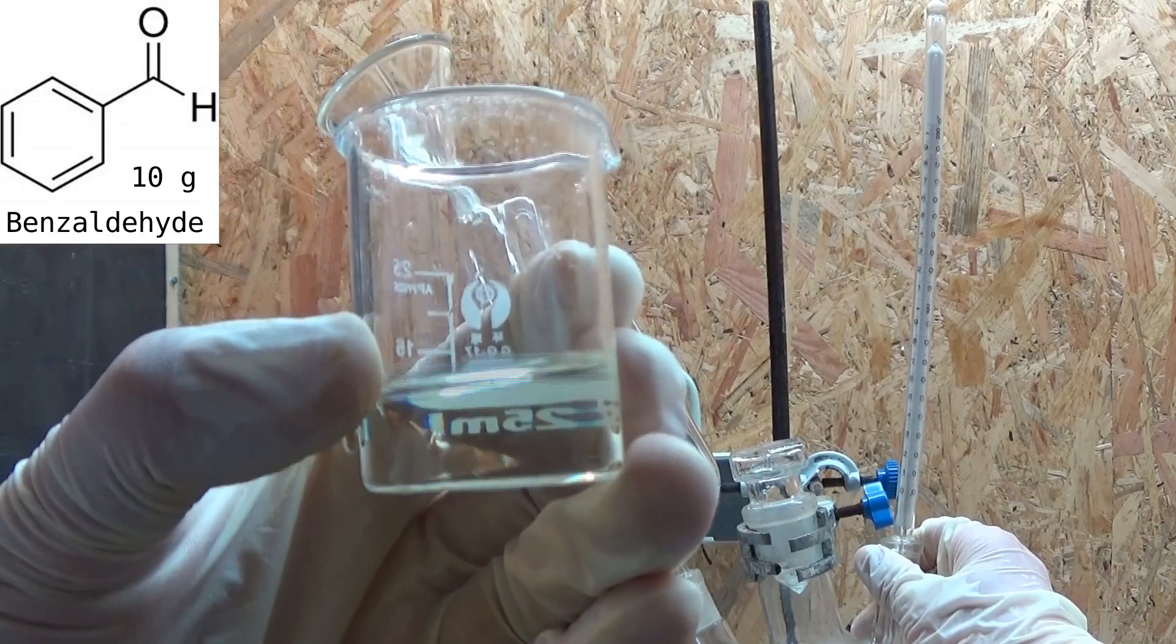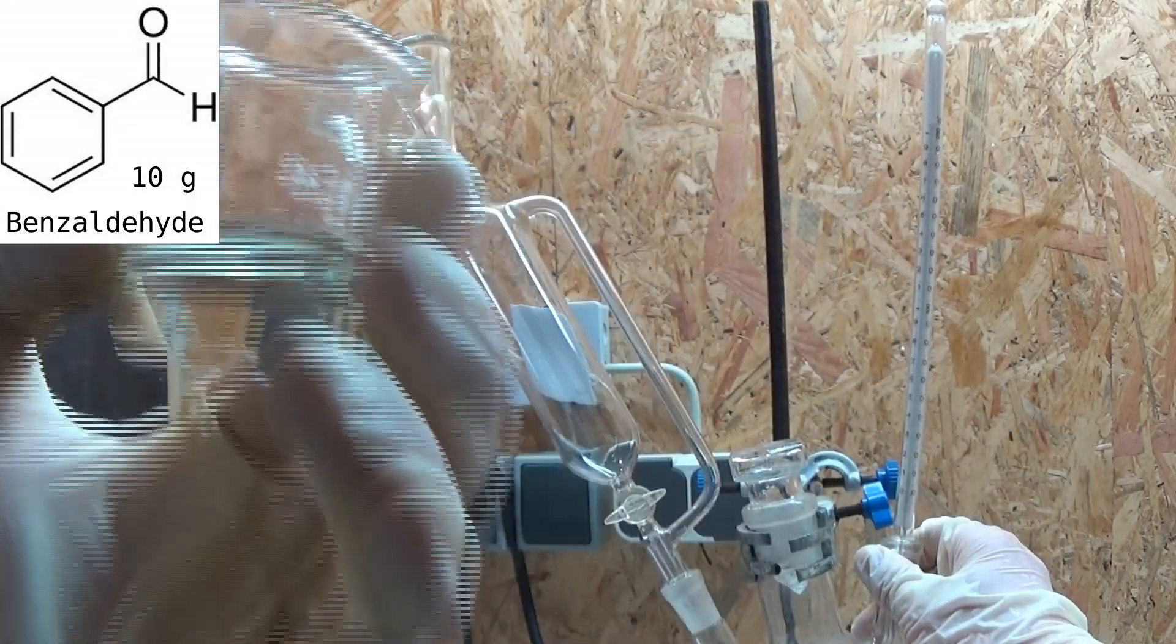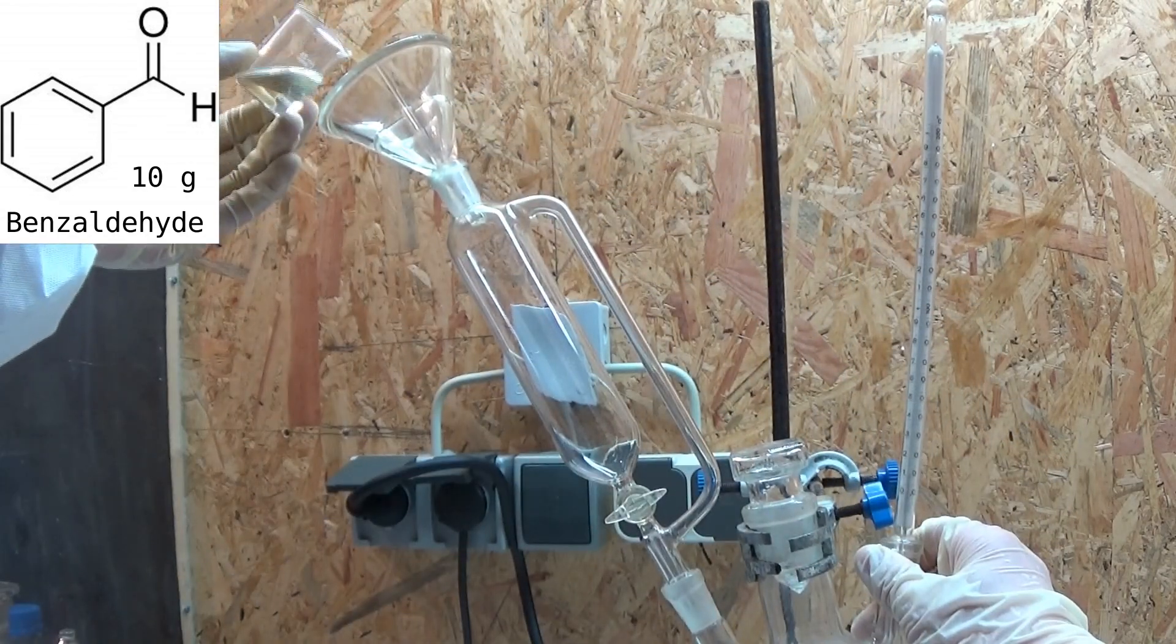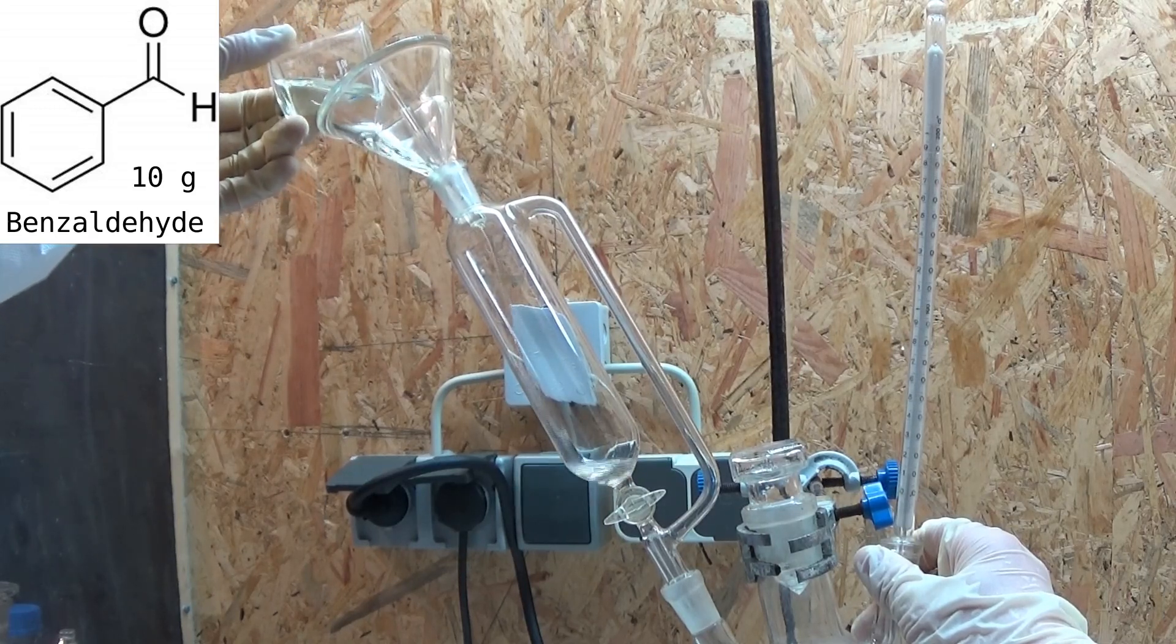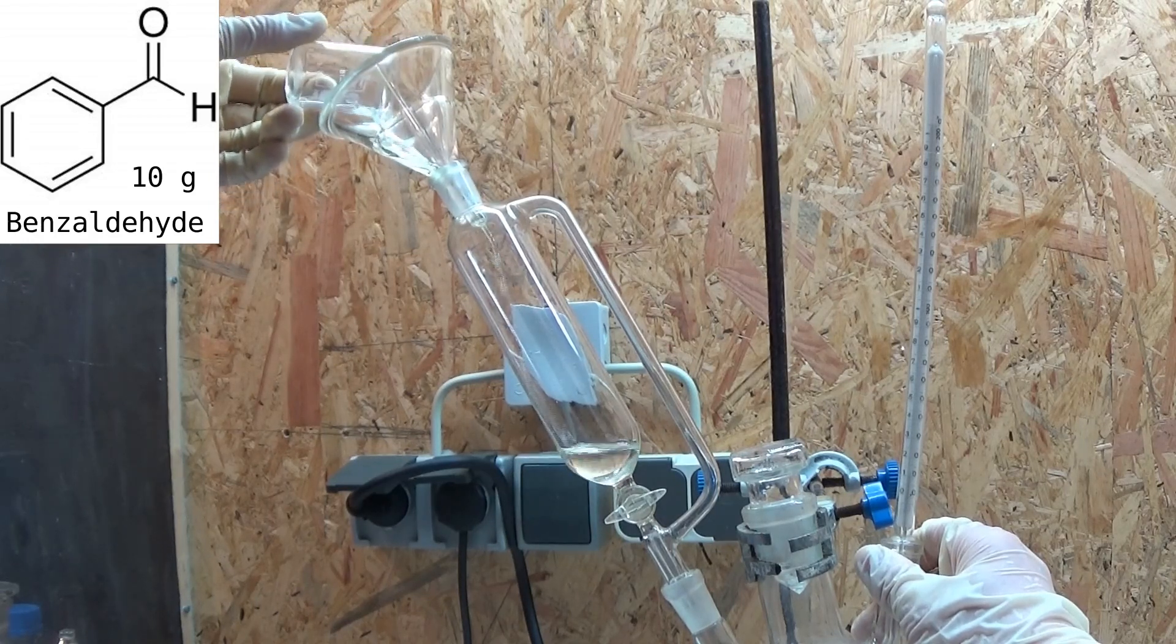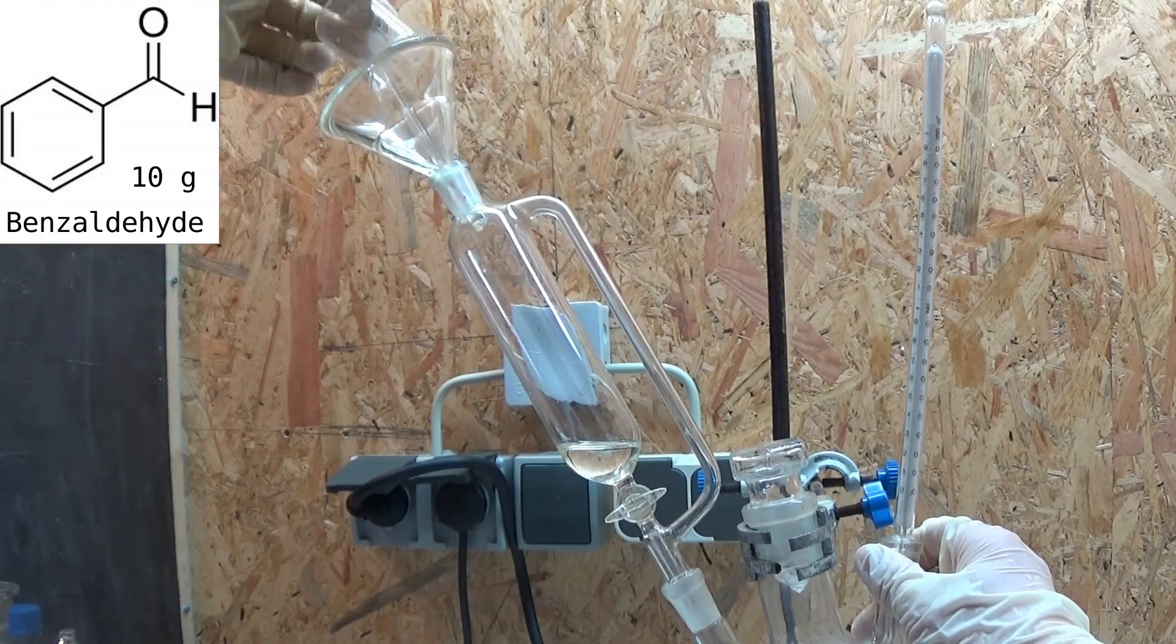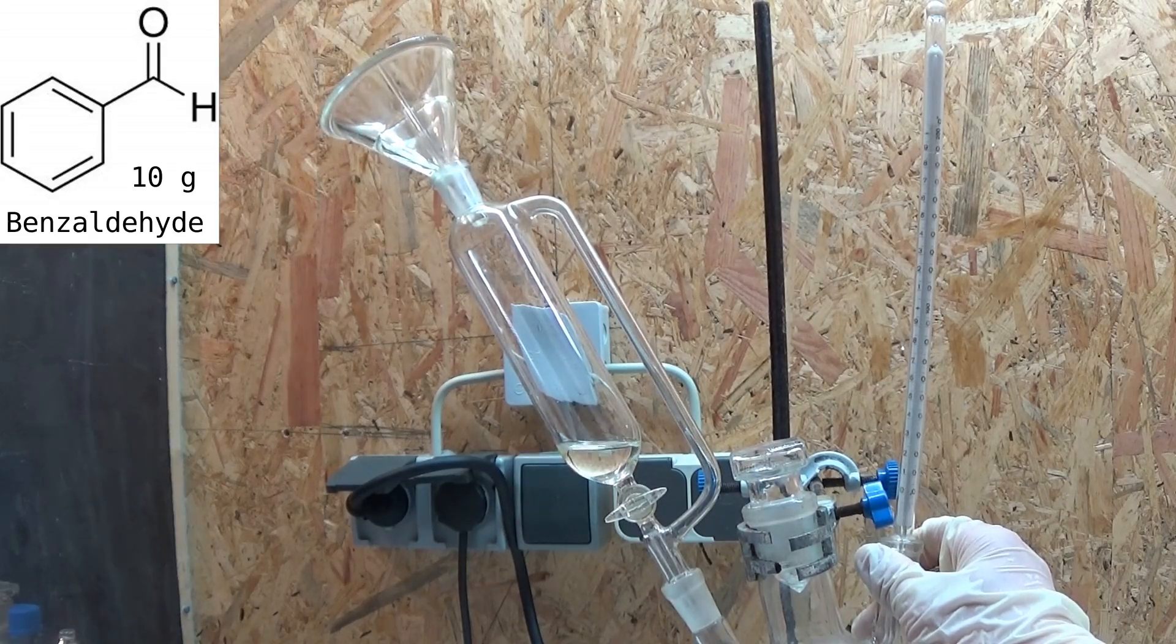After the addition of the sodium is done we place 10 grams of freshly distilled benzaldehyde in the addition funnel. It has to be freshly distilled because benzaldehyde auto-oxidizes with oxygen from the air forming benzoic acid which contaminates the benzaldehyde. This benzoic acid dissolves in the benzaldehyde making them inseparable without distillation.